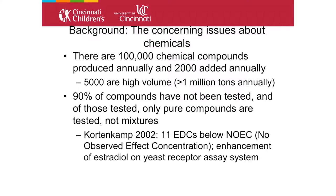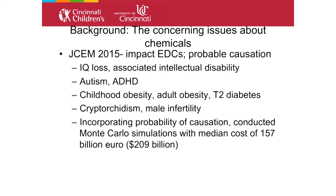Andreas Kortenkamp used 11 different chemicals, all below the no-observed-effect concentration, and put them into a yeast receptor system, finding a very potent estrogen effect — and some of those chemicals were estrogen antagonists. Virtually all Americans have measurable levels of the chemicals I'm going to discuss. Last year, looking at probable causation with EDCs, there was a probable association with IQ loss, intellectual disability, autism and ADHD, childhood obesity, adult obesity and type 2 diabetes, cryptorchidism and male infertility. When they incorporated the probability of causation with economic costs, the median cost was $210 billion a year.